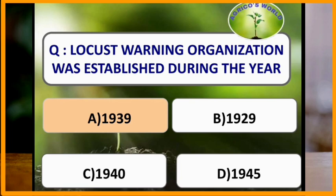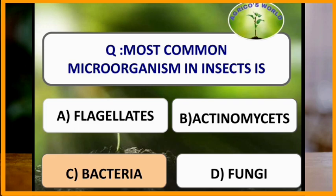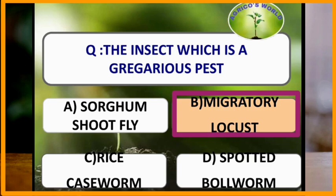Locust warning organization was established in the year 1939. The most common microorganism in insects is bacteria. The insect which is a gregarious pest is migratory locust.